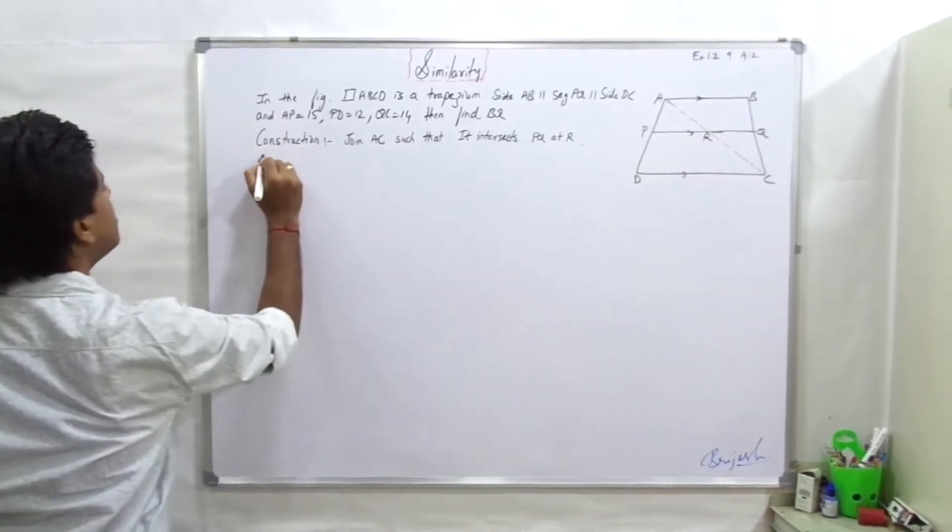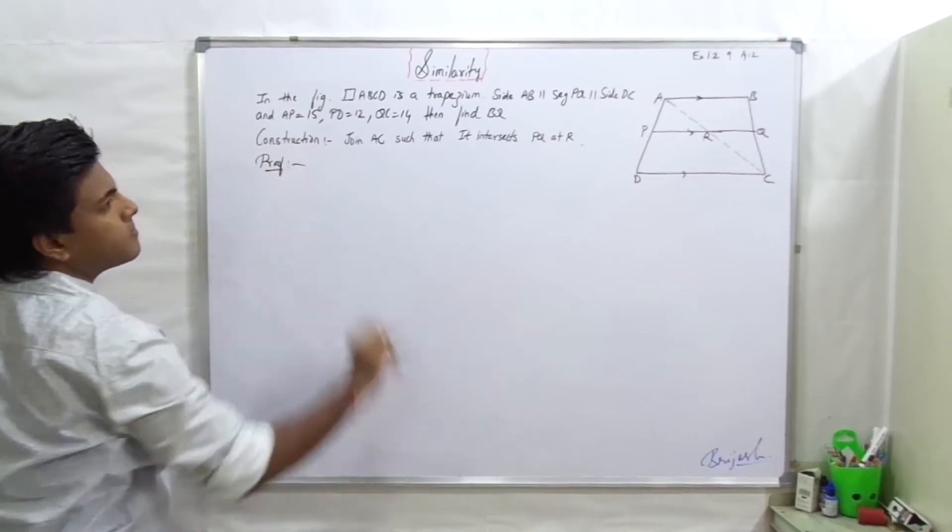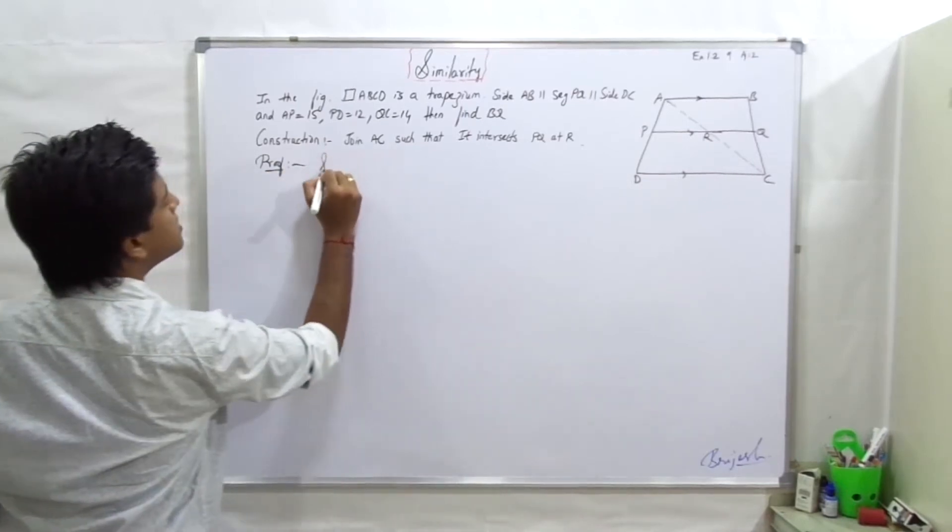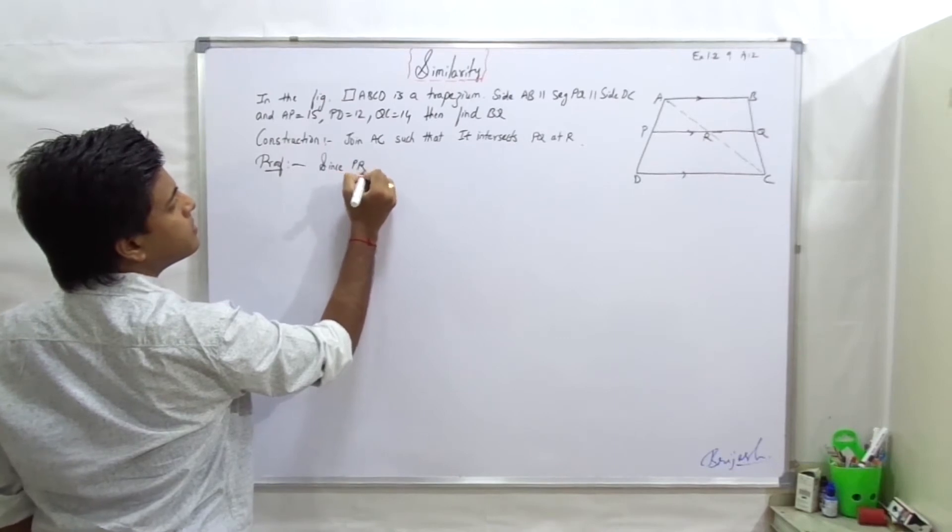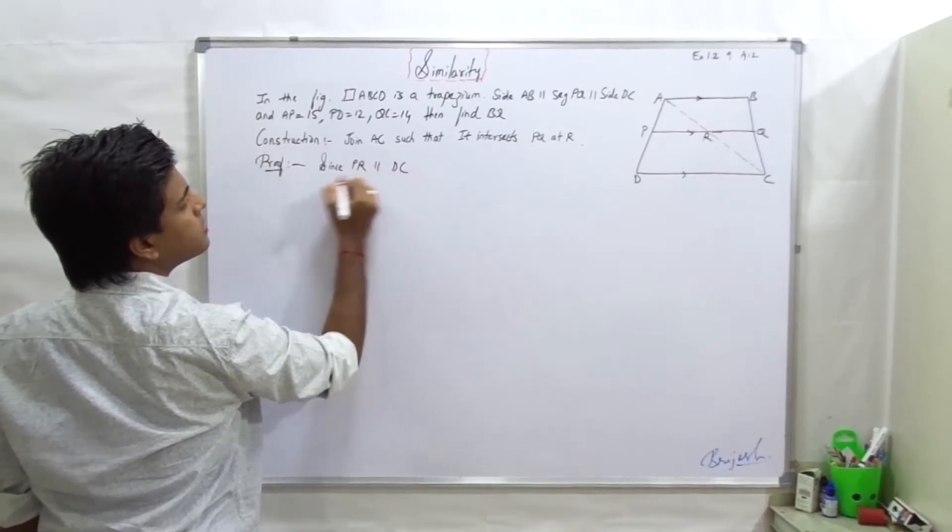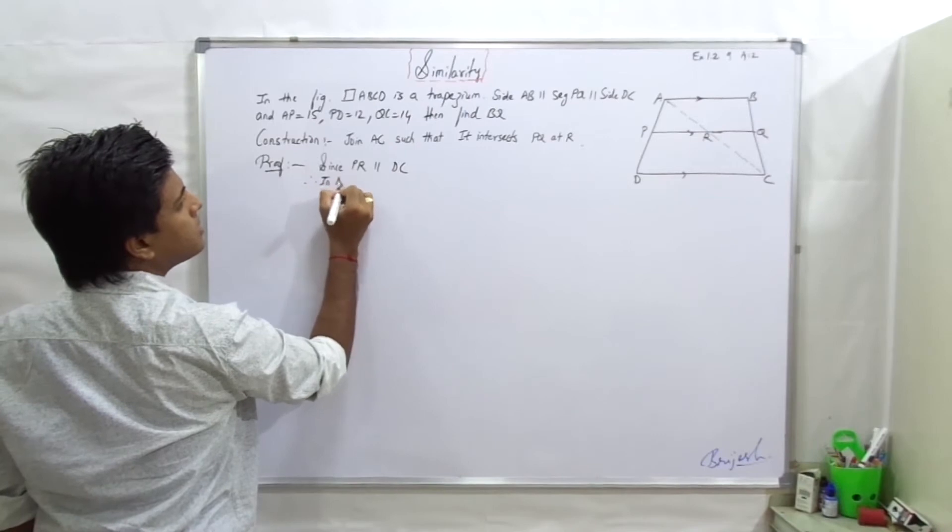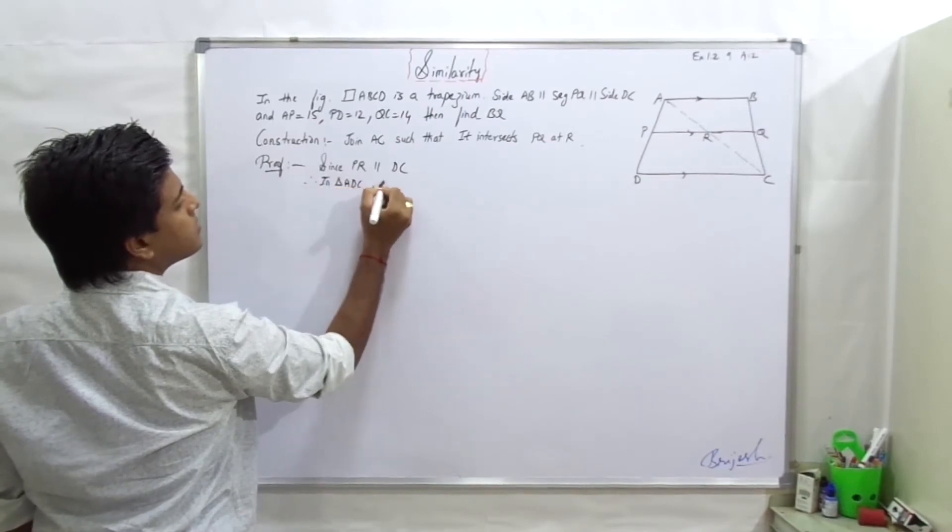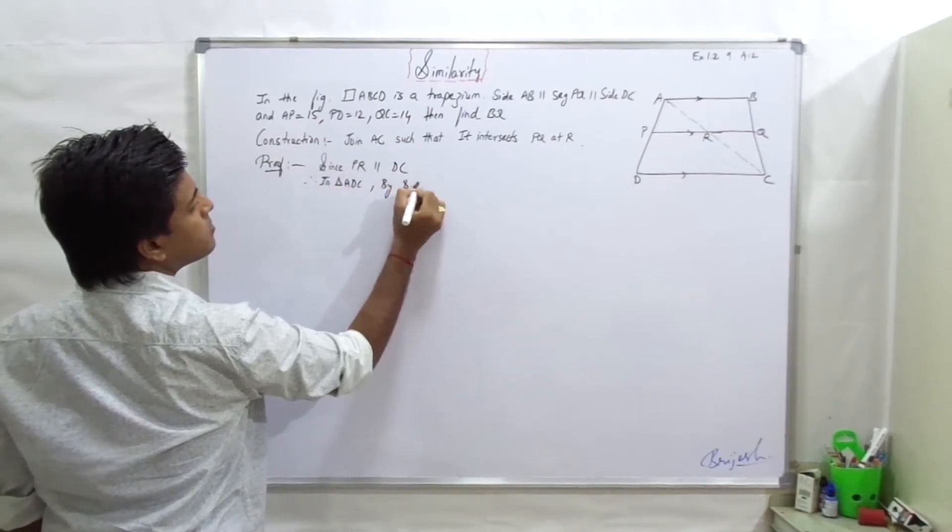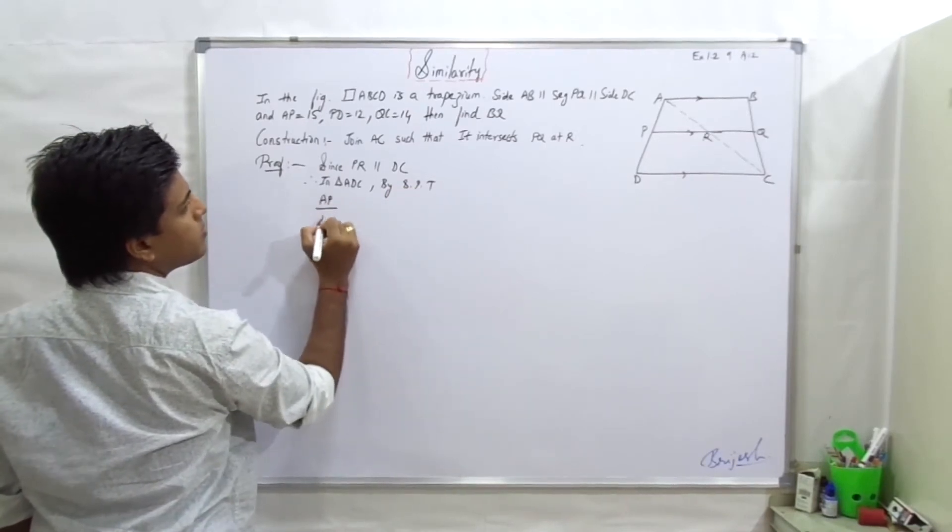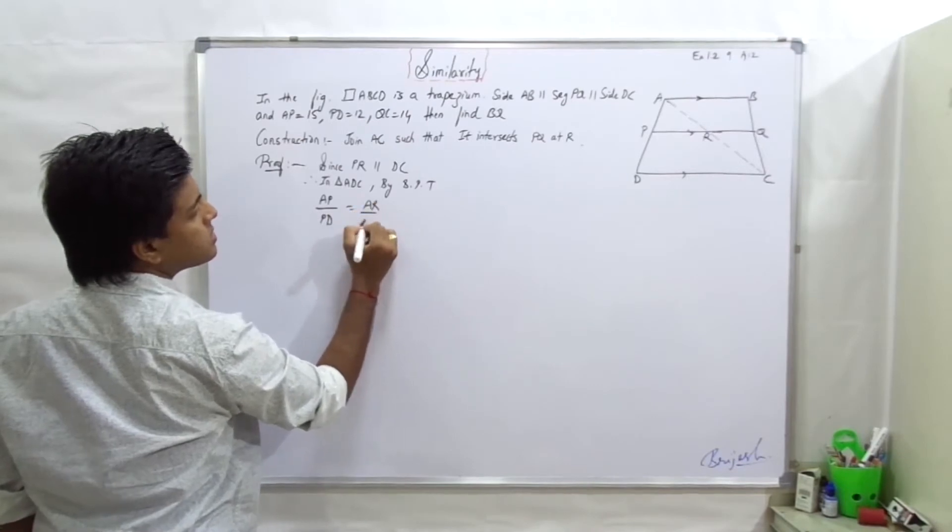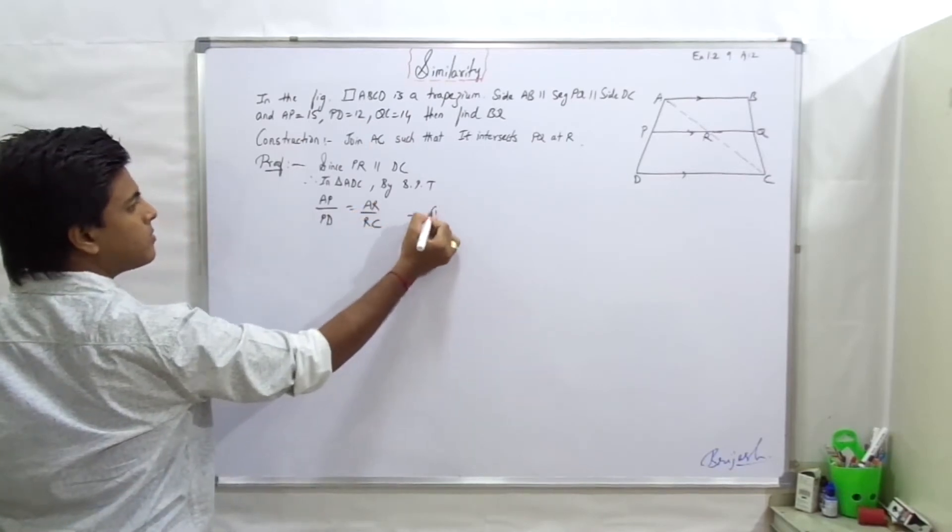Let's start with proof. Since PR is parallel to DC, that would be in triangle ADC by basic proportionality, AP upon PD equal to AR upon RC. So number one.